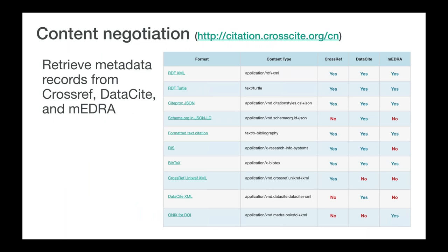I want to finish up by discussing our support for content negotiation. Content negotiation allows a user to request a particular representation of a web resource, and DOI resolvers use content negotiation to provide different representations of metadata associated with DOIs. Crossref is by far not the only DOI registration agency — there's also Datasite and Medra, which provides a lot of support to publishers in Europe. We all collect bibliographic metadata about the works we link to and make that data available through content negotiation. At Crossref, we provide XML and JSON as metadata outputs, but if you have a DOI and want to retrieve the metadata as BibTeX, RDF, XML, Turtle, or as a formatted citation, you can do that using content negotiation.